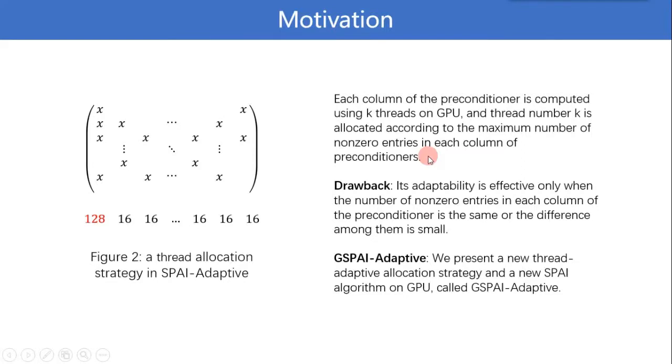Each column is computed using k threads on GPU and as shown in Feature 2, the k is allocated according to the maximum number of non-zero entries in each column of preconditioners. But this method has obvious drawbacks. Its adaptability is effective only when the number of non-zero entries in each column of the preconditioner is the same or the difference among them is small.